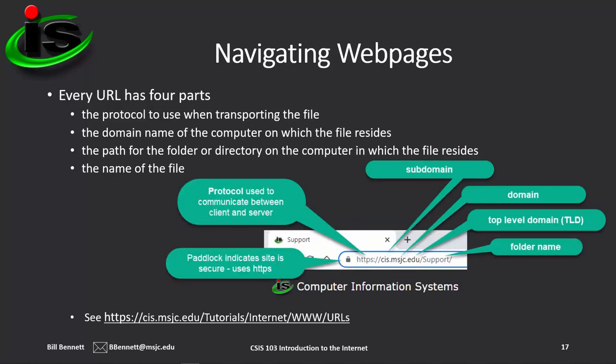Every URL has four parts: the protocol used to transport the file between the web browser and the web server; the domain name of the computer on which the file resides; the path for the folder or directory on the computer in which the file resides; and the name of the file — though not always the file name, as in this example where we're only seeing the folder and a default file is automatically loaded. The protocol will always be either HTTP or HTTPS, unless you're viewing a web page on your own computer, in which case it will be listed as 'file.'